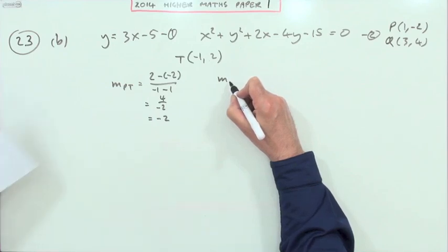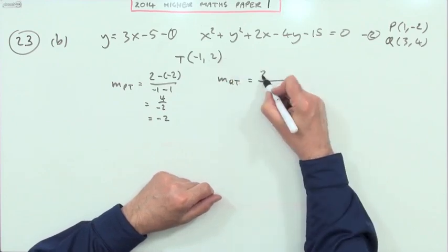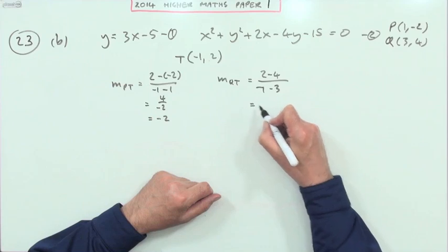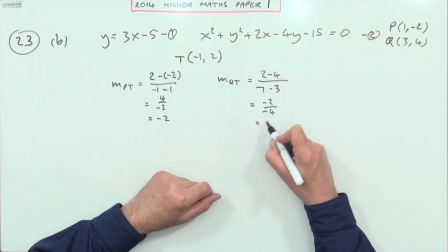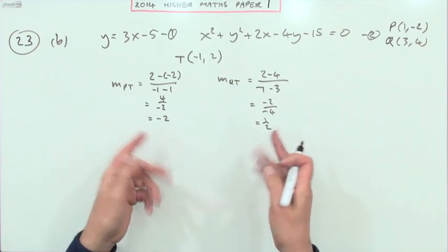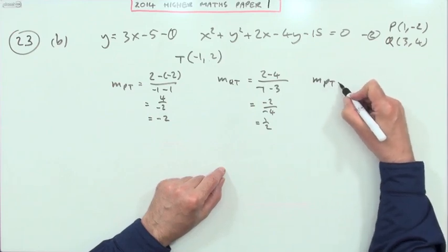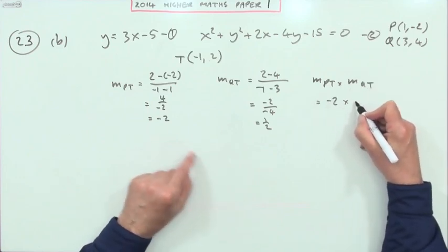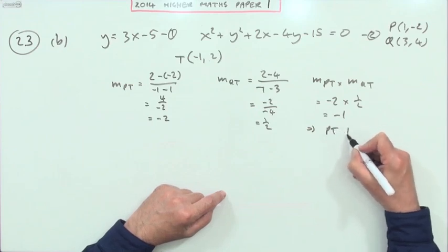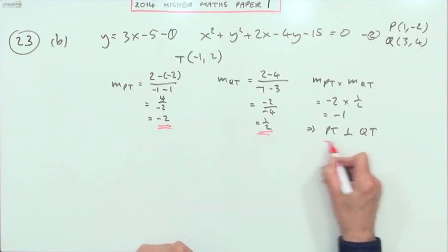The gradient of QT would be 2 take away 4 for the difference in the y coordinates over negative 1 take away 3 for the difference in the x coordinates. That's a negative 2 over a negative 4, which is a positive 1 half. Now to show that they're perpendicular, you can't just say, oh look, it's upside down and it's negative. You have to make a statement which says m_PT times m_QT, which is negative 2 times a half, comes to negative 1. Then you can say PT is perpendicular to QT.